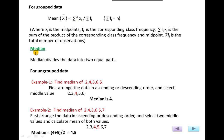The second method is median. Median divides the data into two equal parts. For ungrouped data with 5 observations, first arrange the data in ascending or descending order: 2, 3, 4, 5, 6. Then select the middle value. The median is 4.